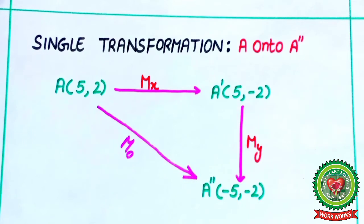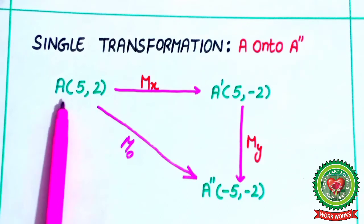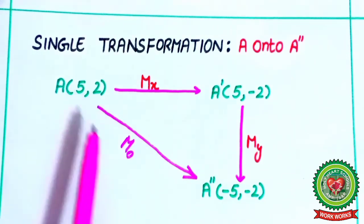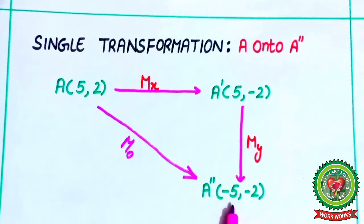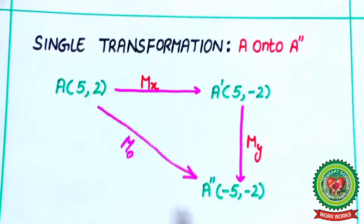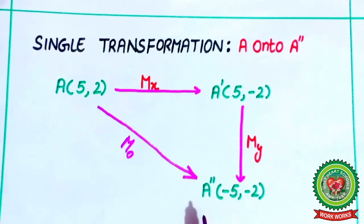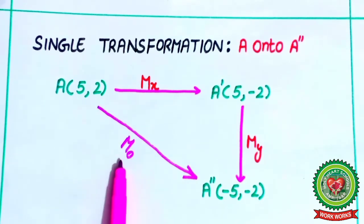Another way for single transformation: point A is (5, 2) and point A'' is (-5, -2). In A, plus signs are there, and in A'', both signs are minus. It means there is a change in both abscissa and ordinate signs. So reflection is in the origin only. Single transformation is origin.